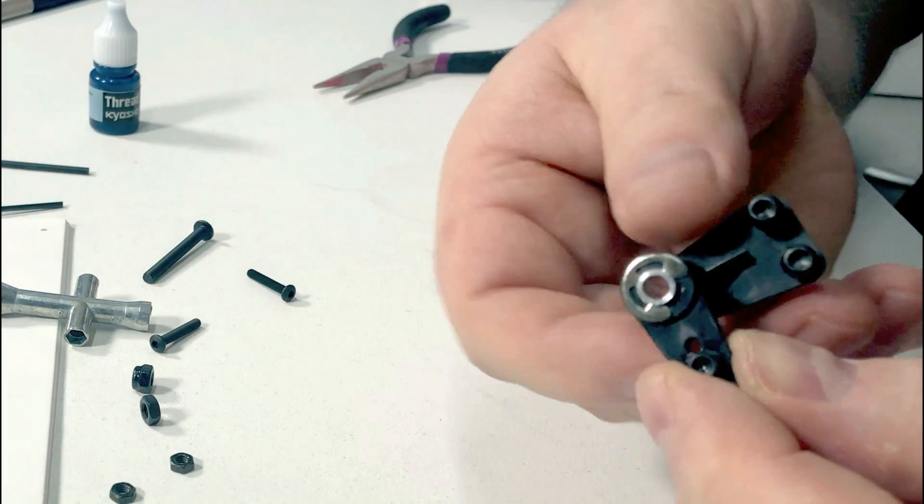And a couple of things to look out for here. The rear chassis braces, pay attention to the way they curve down at the back. Both of them got to face down.